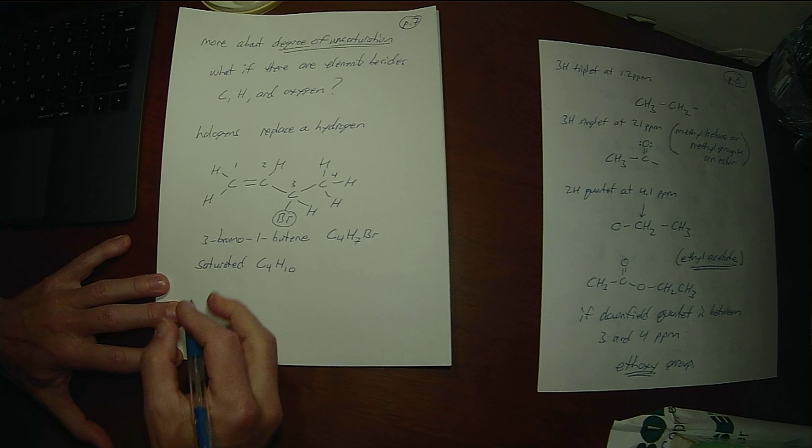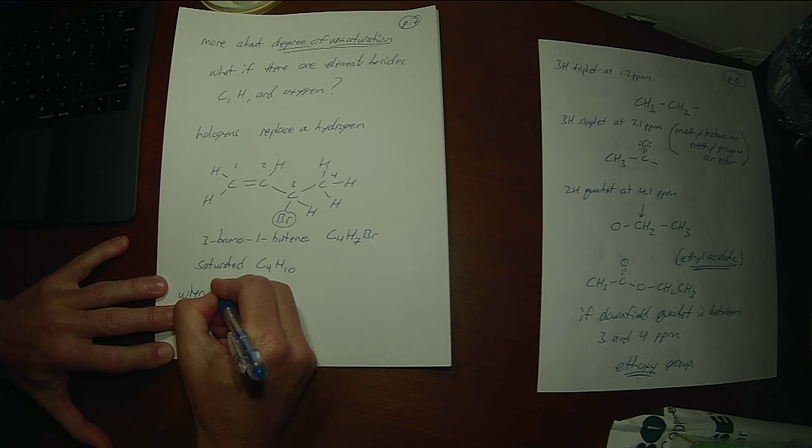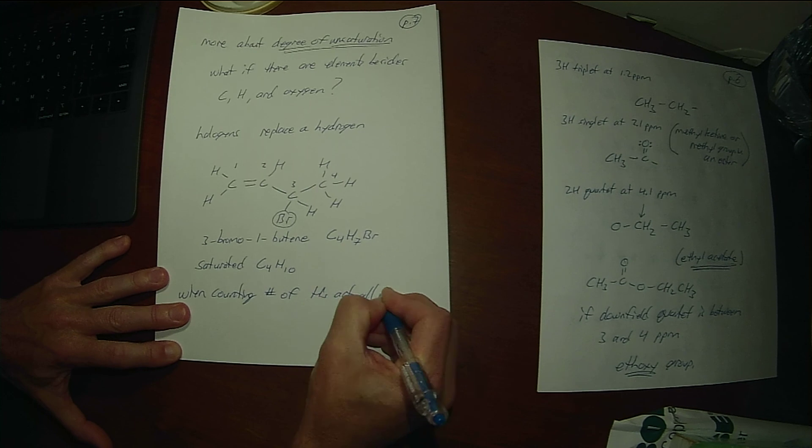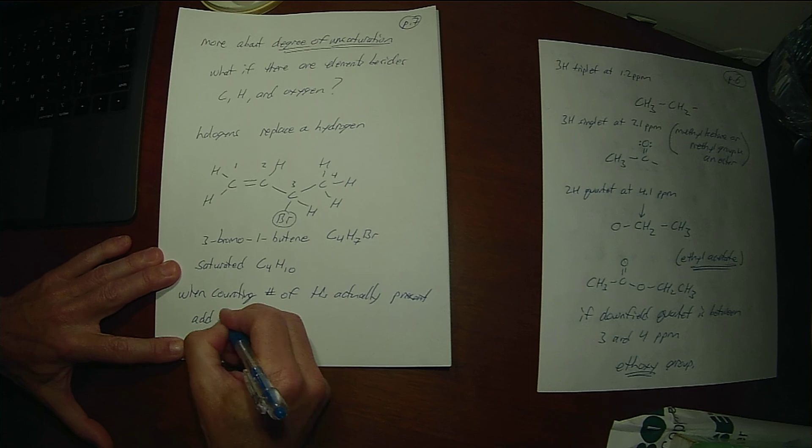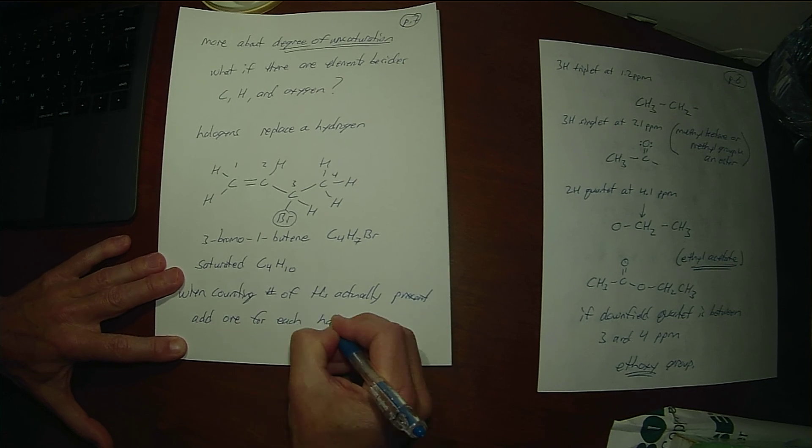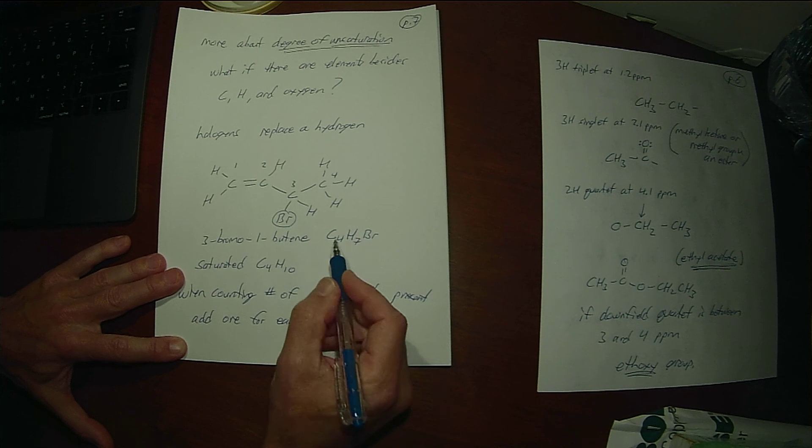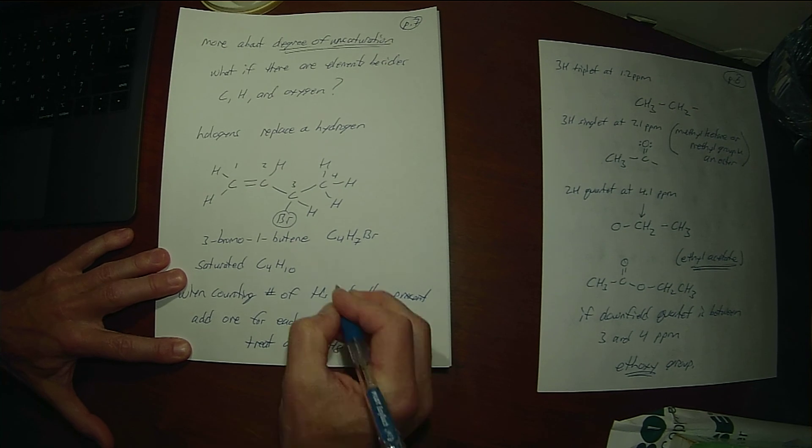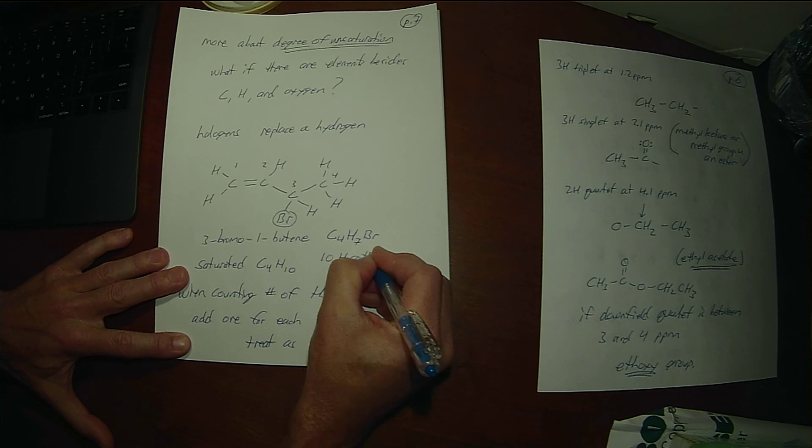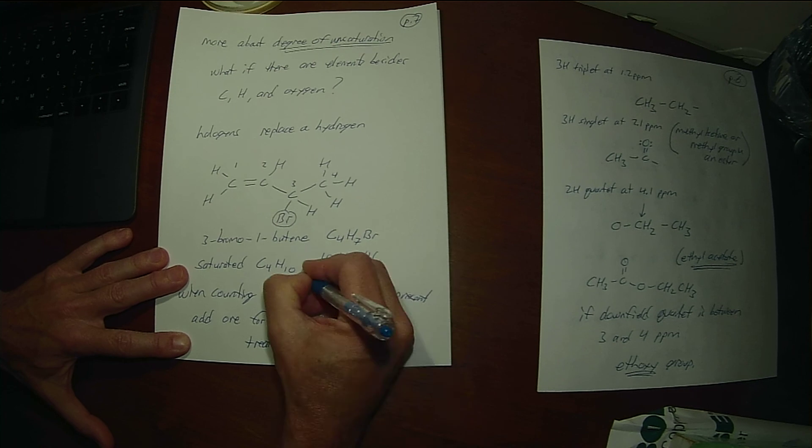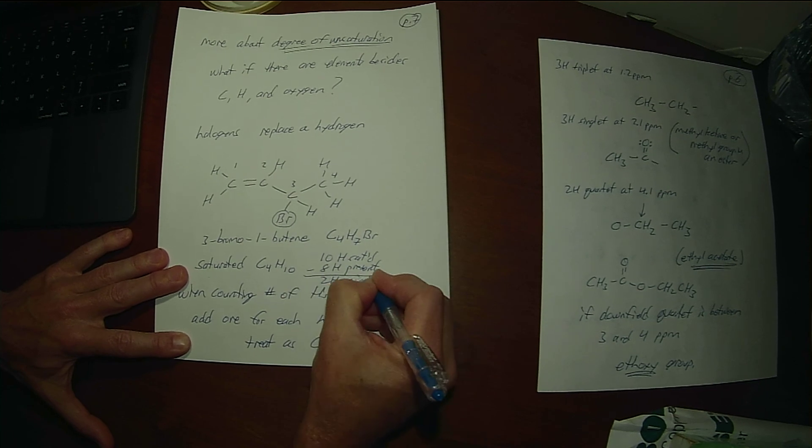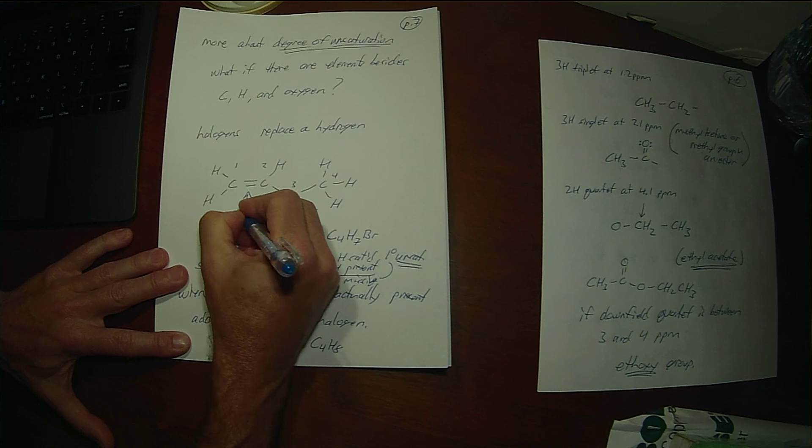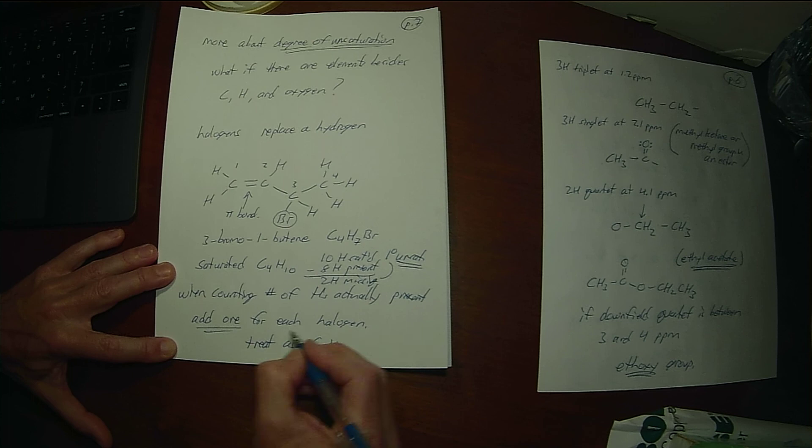But you'll notice that when I put a bromine in there, the bromine basically takes the place of where a hydrogen would be. So we have to add the number of halogens when counting the number of hydrogens that are actually present, add one for each halogen. So we're not going to treat this as C4H7, we're going to treat this as C4H8. And now when we subtract 10H saturated minus 8H present, we're going to get two hydrogens missing, and that tells us one degree of unsaturation. And there it is, right? That's the pi bond. That's the degree of unsaturation. So we have to add one for each halogen when we're counting.